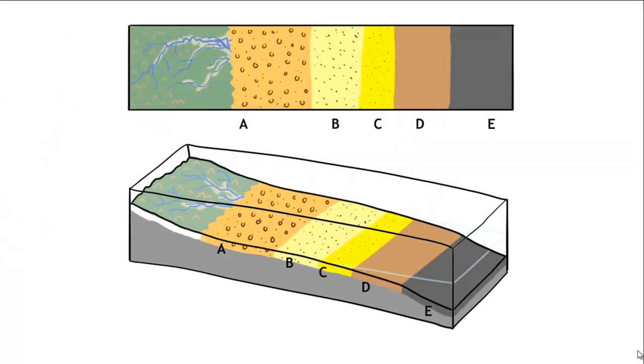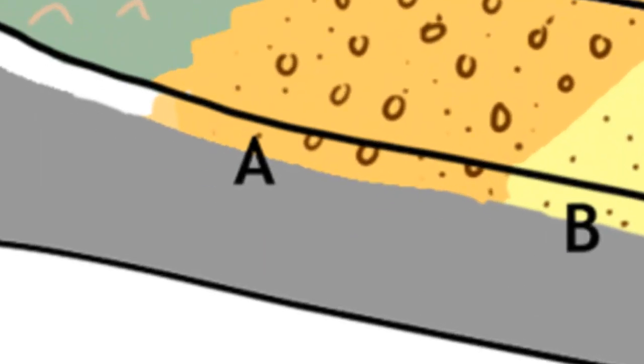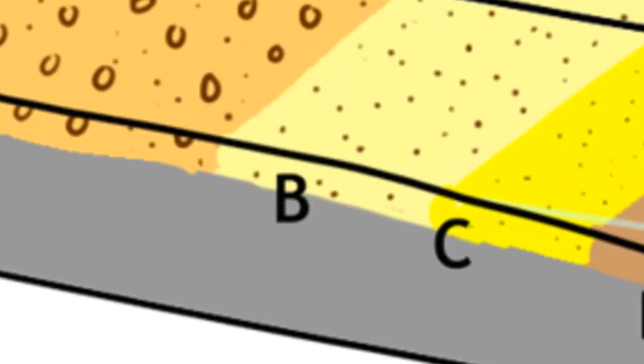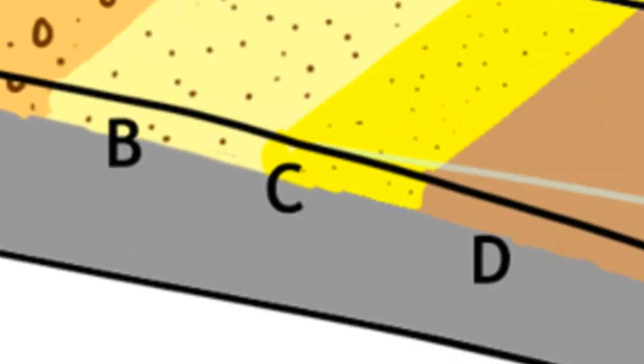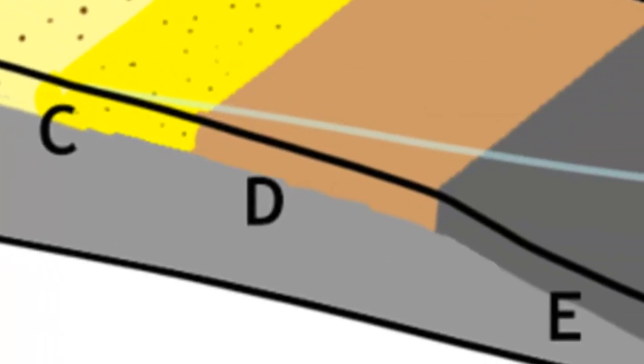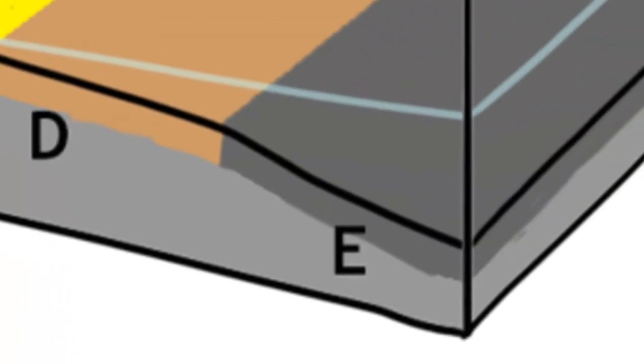If we give a little bit of time to the system and we keep sea level in exactly the same place, maybe we build up something like this. So deposits of gravel at location A, deposits of coarse sand at location B, deposits of fine sand at location C, silt at D, and clay at E.